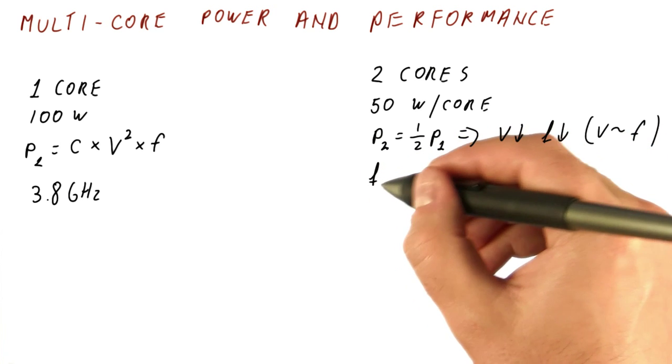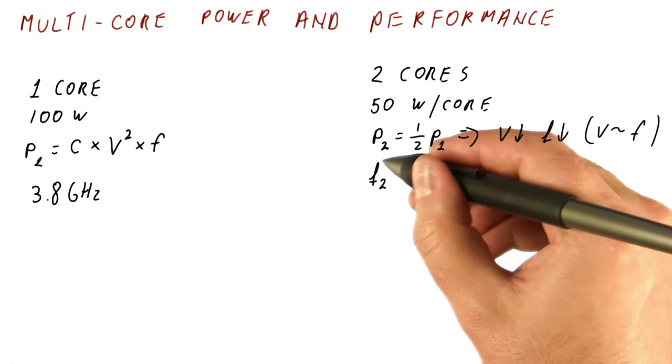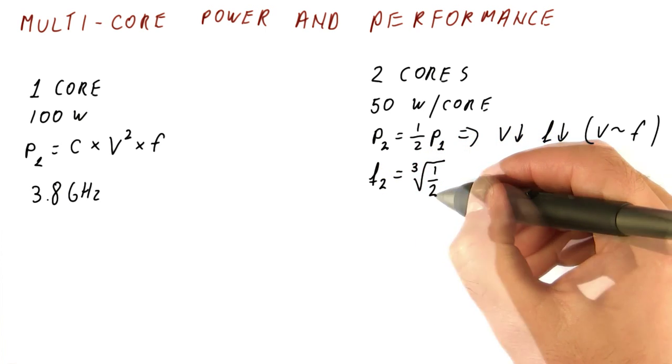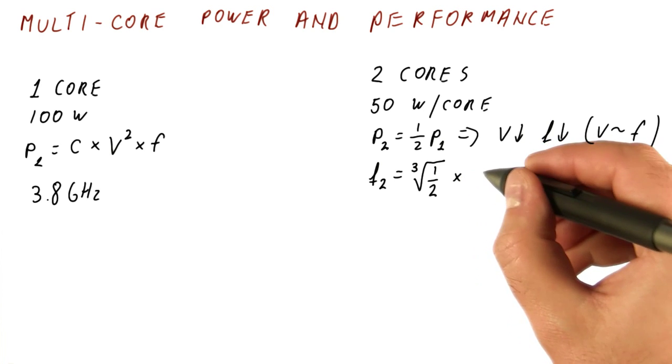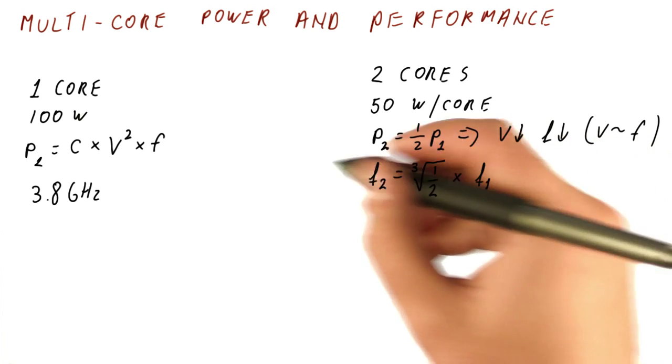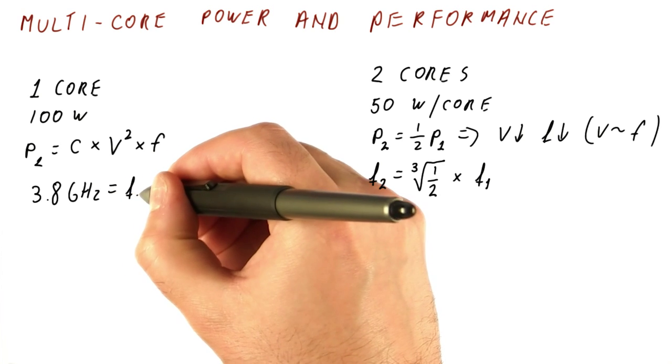So the frequency at which we can run a core in a two-core system is going to be cubic root of one-half times the frequency at which we can operate a single core in a single-core system, which is this frequency.